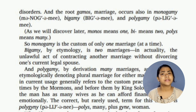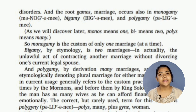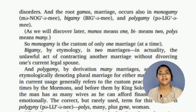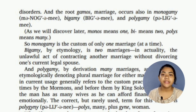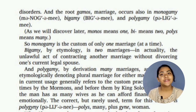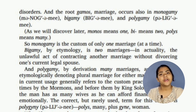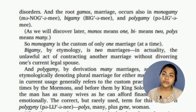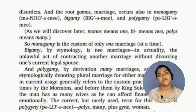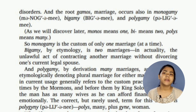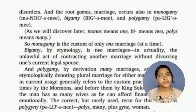Polygamy means many marriages — 'poly' means many and 'gamy' means marriage. Polygyny means many women. Polygamy refers to two or more marriages for a male, while polygyny specifically involves multiple wives.